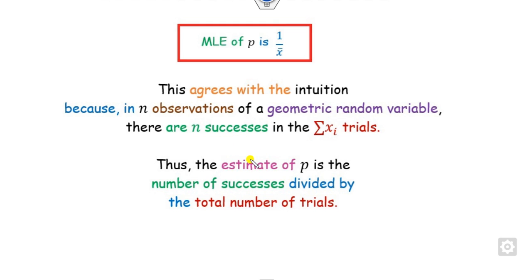You can see that the estimation of P is the number of successes divided by the total number of trials.